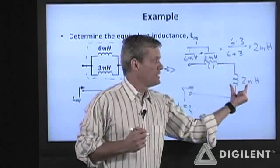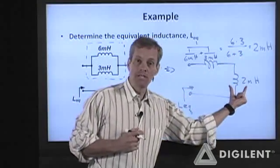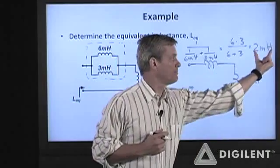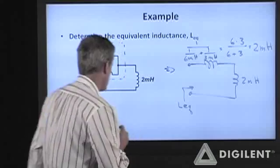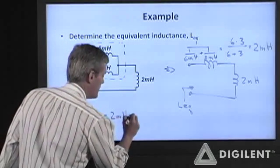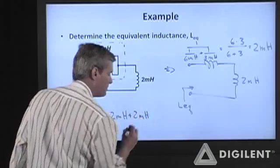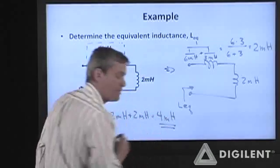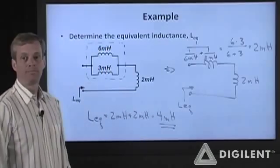These inductors are now in series to get the overall inductance of that combination. I simply add these two inductances. So L_eq is two millihenries plus two millihenries is an overall inductance of four millihenries.